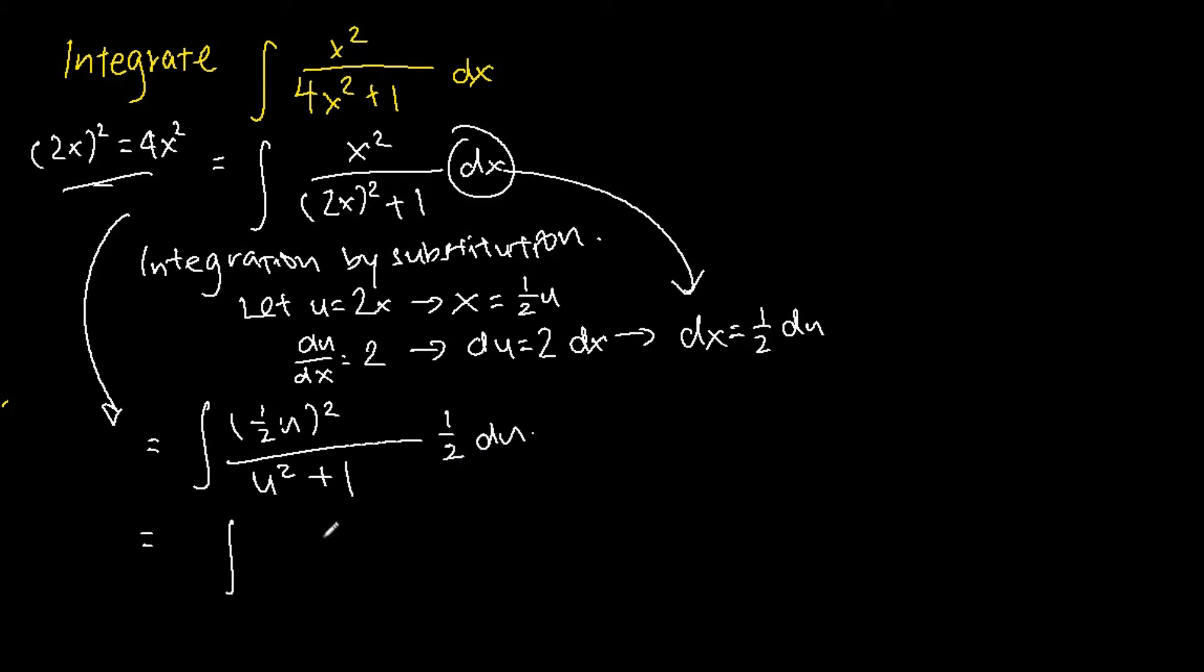So we simplify the numerator, we get 1 quarter u squared over u squared plus 1 half du and we bring out all the constants, we will get 1 over 8, the integral of u squared over u squared plus 1 du.